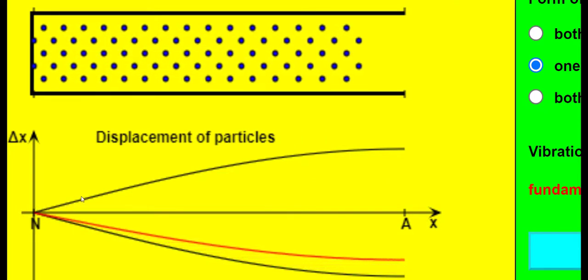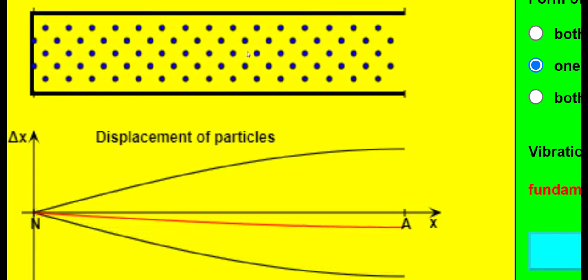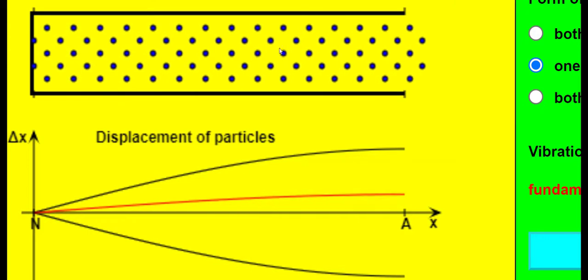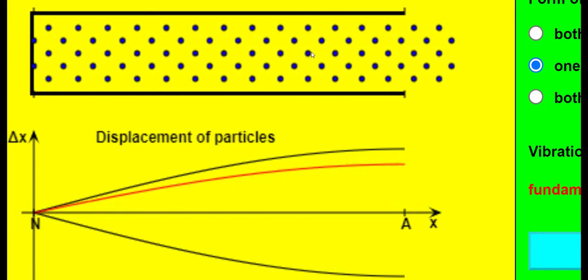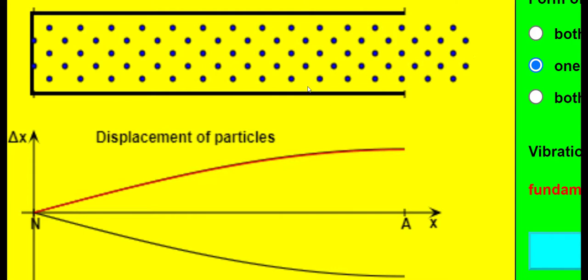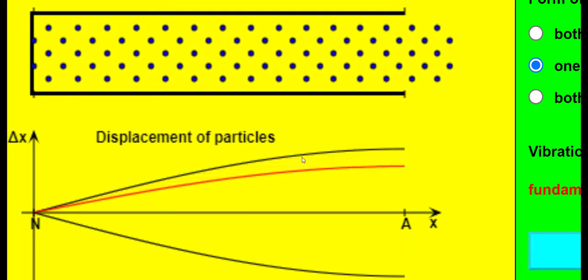As we move away from the left end to the right, we see that the circles are oscillating in phase with each other at a certain frequency and that their amplitude gradually increases as the graph shows.